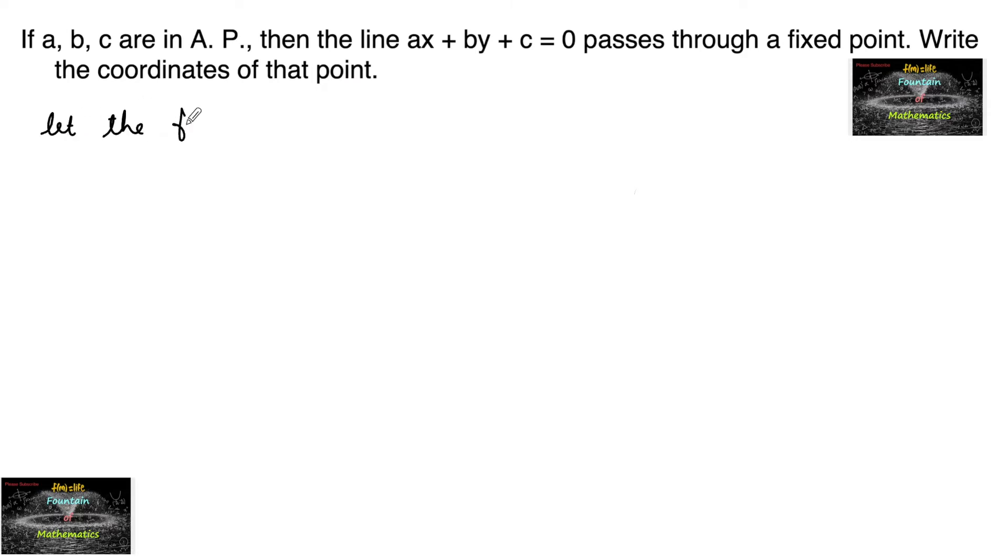Let the fixed point be H, K so that the line AX plus BY plus C equals 0 passes through fixed point H, K, which implies that AH plus BK plus C equals 0.